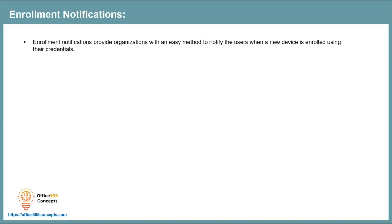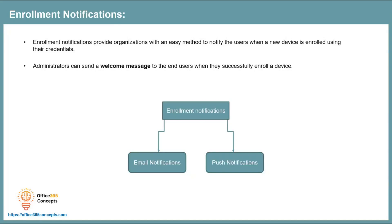Apart from this, administrators can send a welcome message to end users when they successfully enroll a device. In Microsoft Intune, you can create two types of notifications: email notifications and push notifications. By configuring these notifications, administrators can send notifications via email and as a push notification on the Company Portal app.